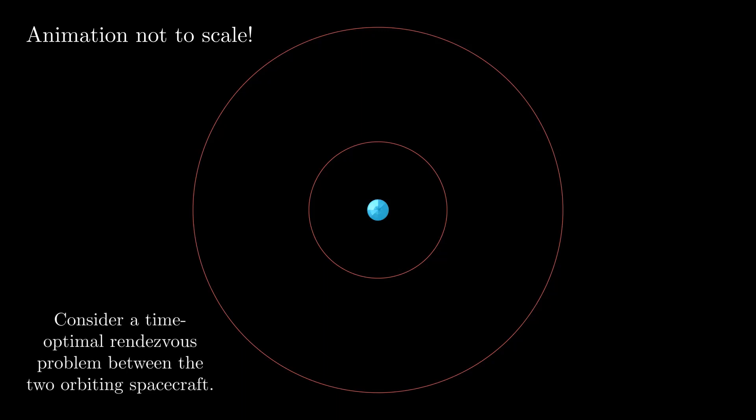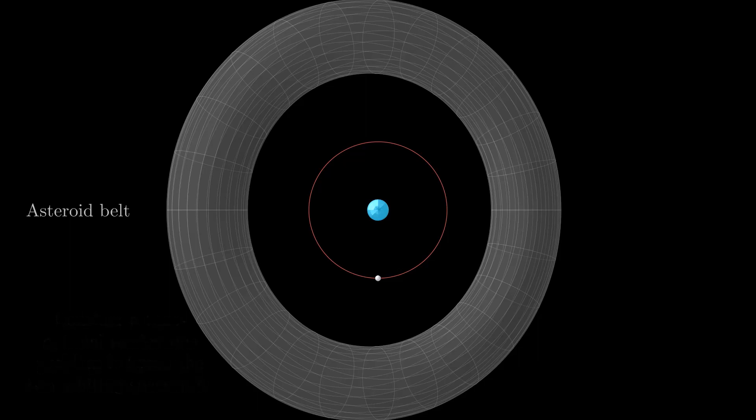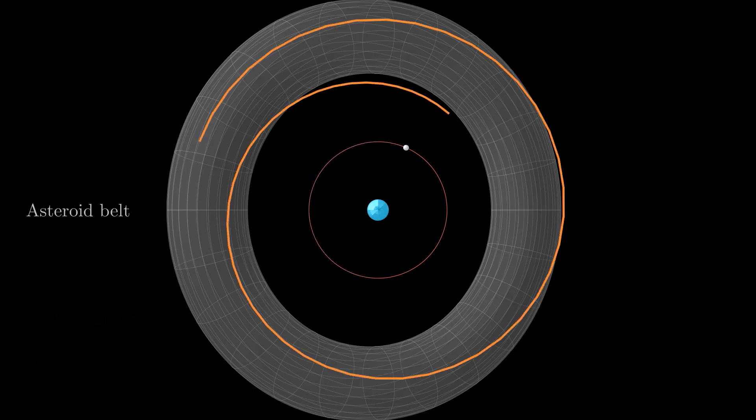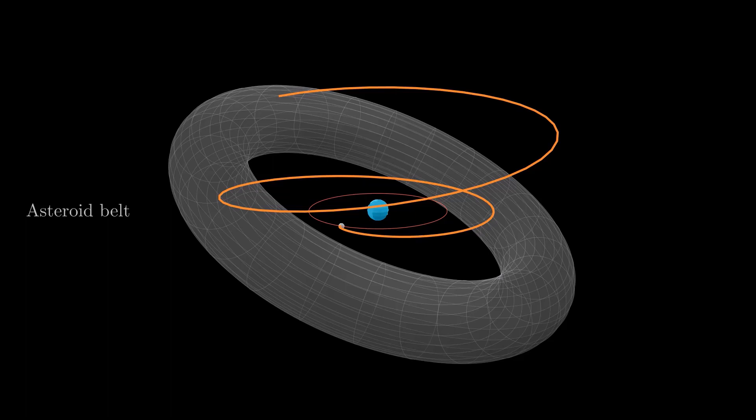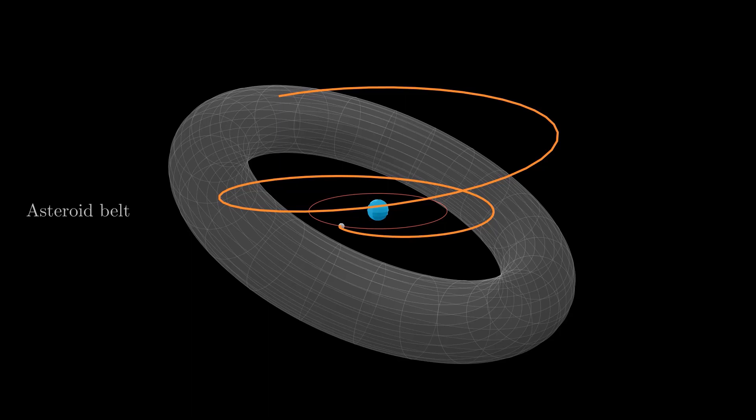To illustrate these concepts in the case of interplanetary trajectories, let's consider a mission described by the following optimal control problem. A spacecraft in the asteroid belt needs to perform a time-optimal, constant acceleration, low-thrust rendezvous with another spacecraft or planet in a target circular orbit, for example to quickly transport mined material to Earth. Note that this optimal control problem is representative of any rendezvous between two orbiting bodies.